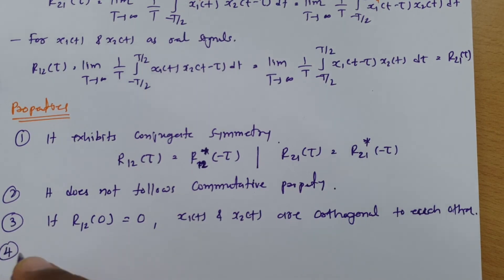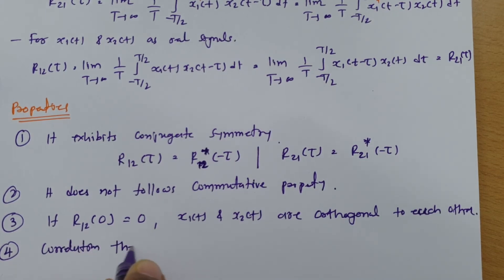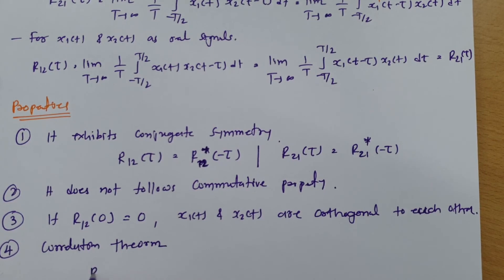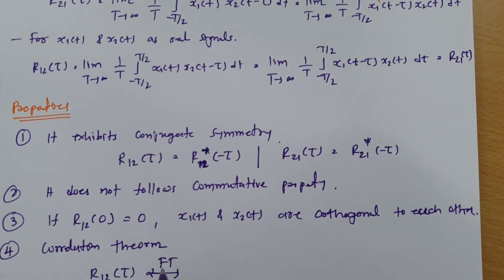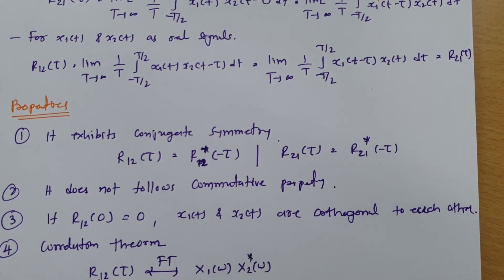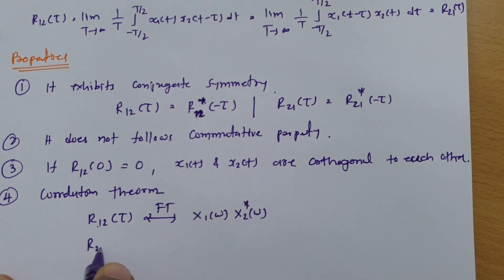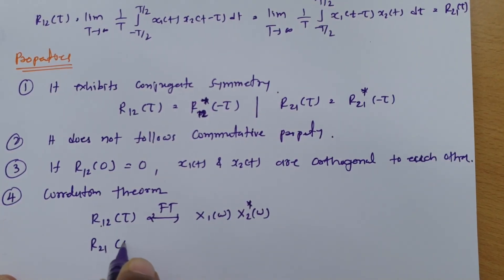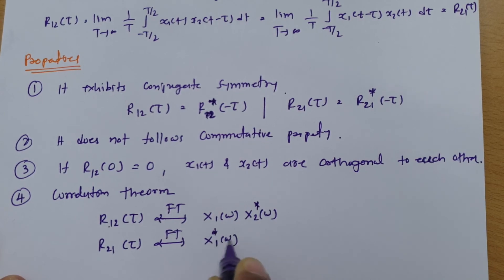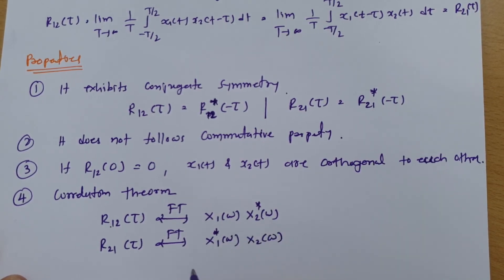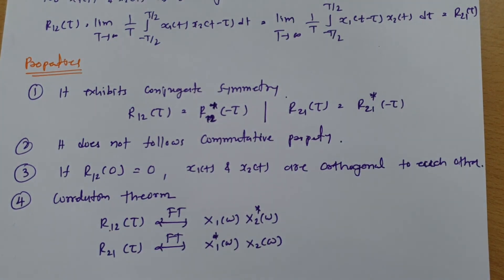The last property is the correlation theorem. It states that if you take the Fourier transform of the cross correlation of the first signal with the second signal, it equals X1(ω) into the conjugate of X2(ω). Similarly, the Fourier transform of r21(τ) equals the conjugate of X1(ω) into X2(ω). This is the correlation theorem and is an important property useful in solving examples.